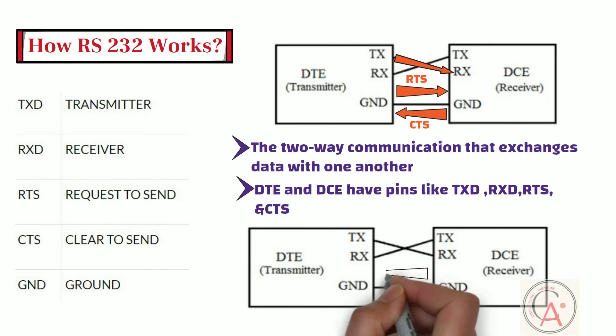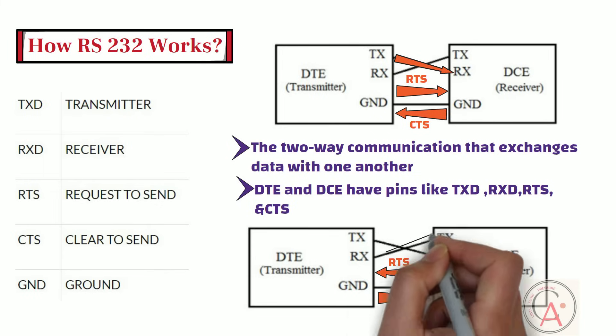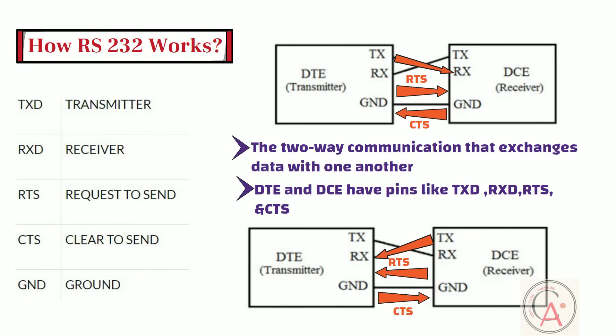Similarly, when DTE acts as a source, the RTS generates a request-to-send signal. Then from the other side, the data transmission equipment's CTS clears the path for receiving data. After clearing the path, it gives a signal to the RTS of the DCE source to send the signal. Then the bits are transmitted from the data transmission equipment to the data communication equipment.